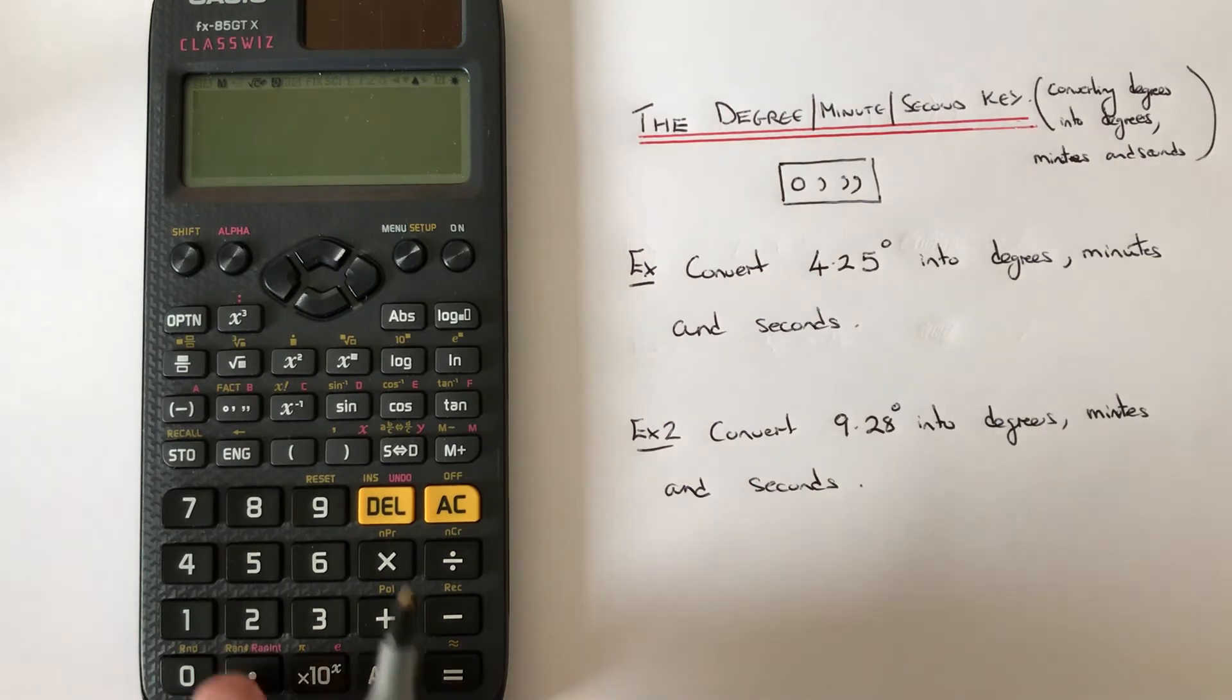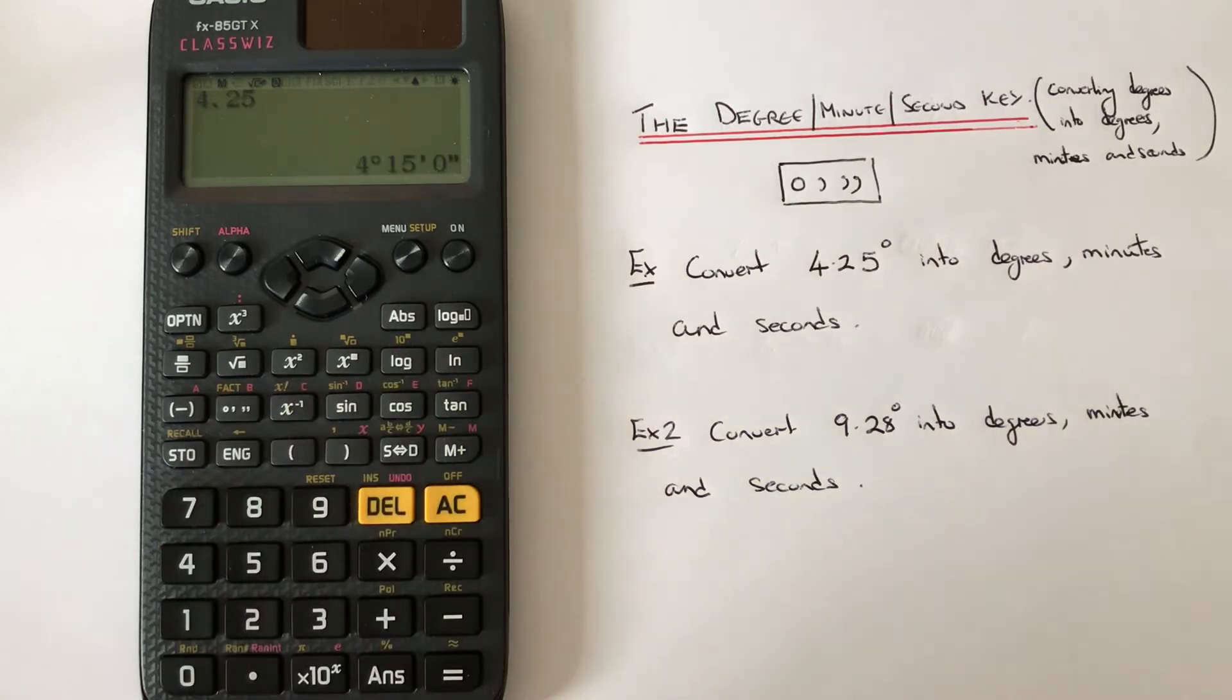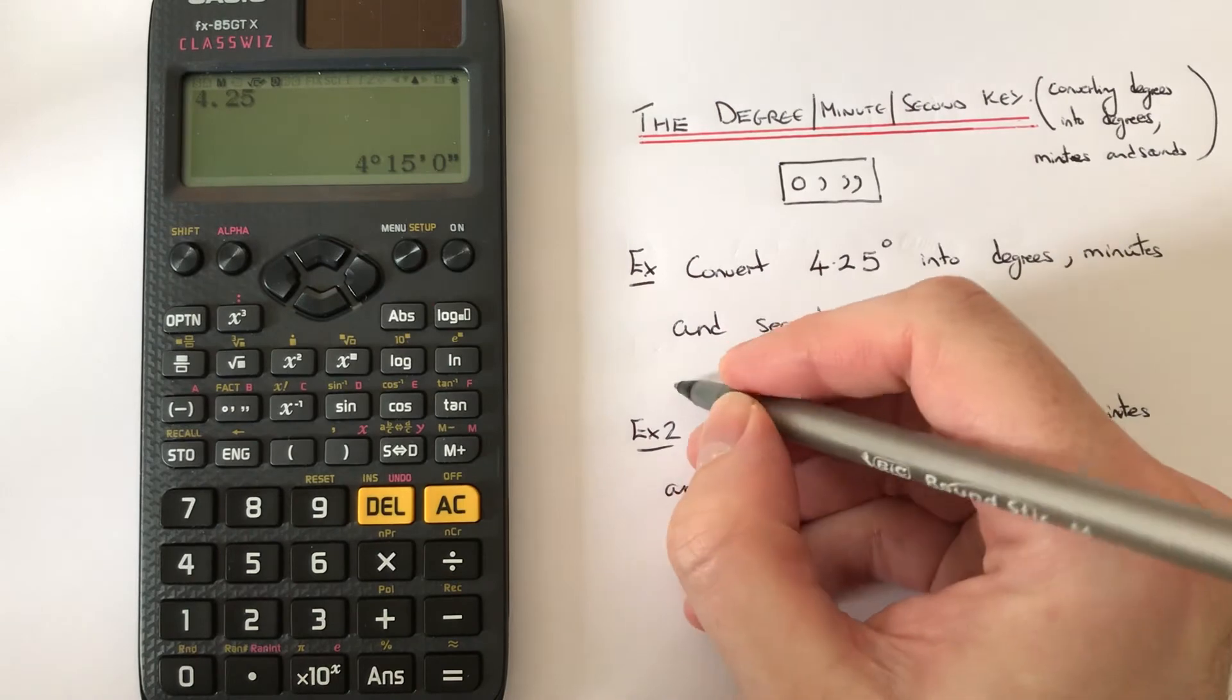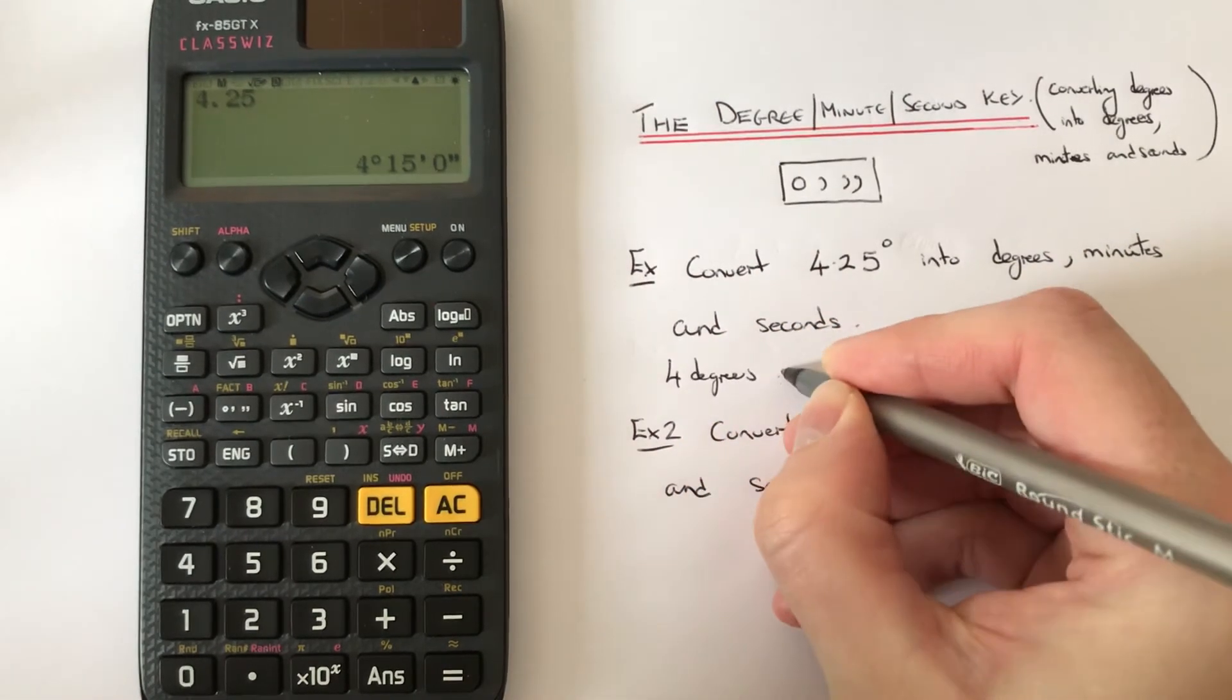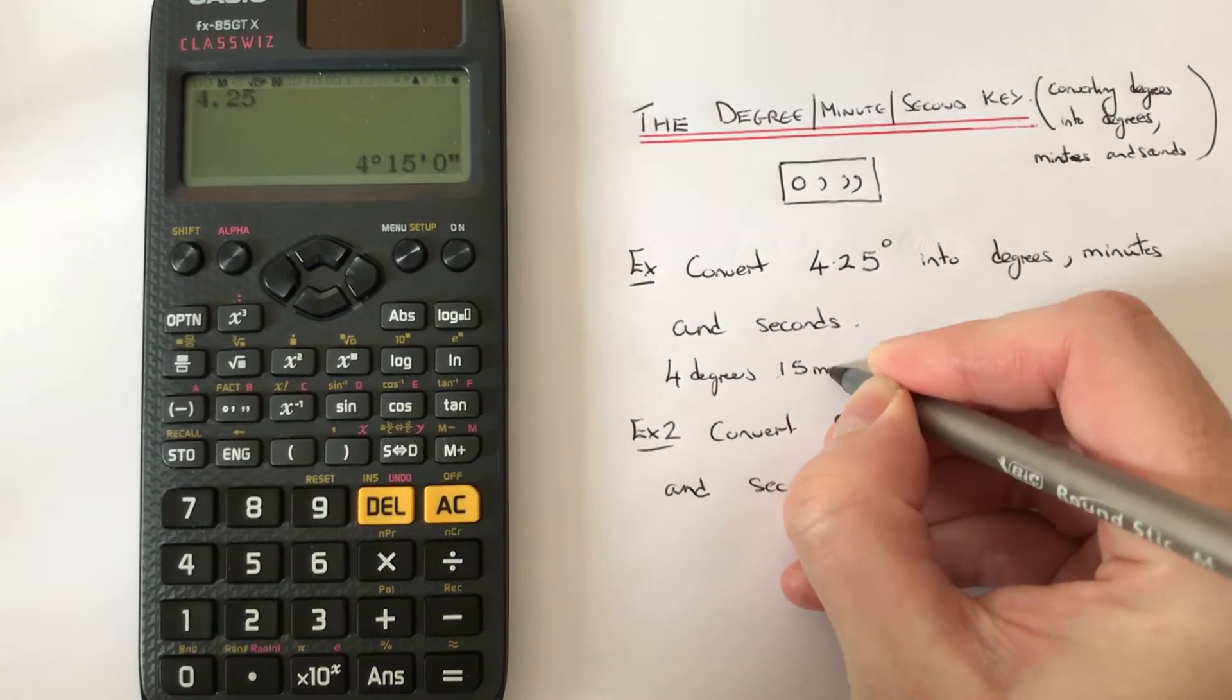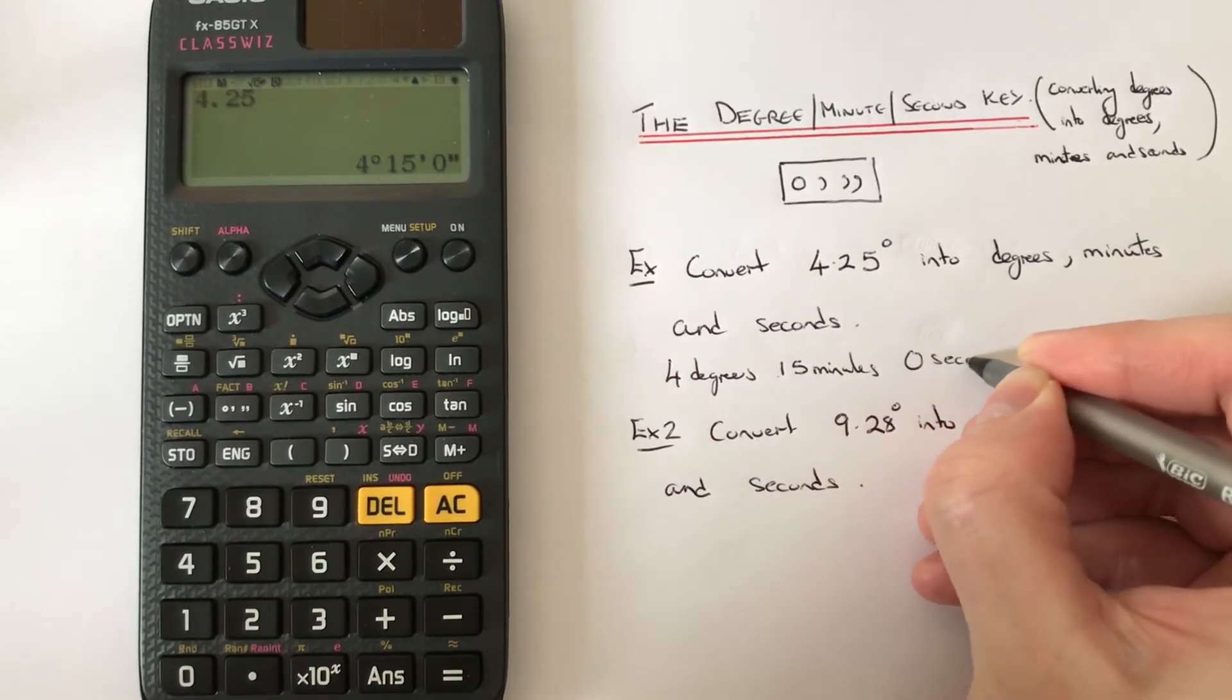So to do this let's just type in 4.25, press the equals key and then if we press this key here we get it in degrees, minutes and seconds. So we have four degrees, 15 minutes and zero seconds.